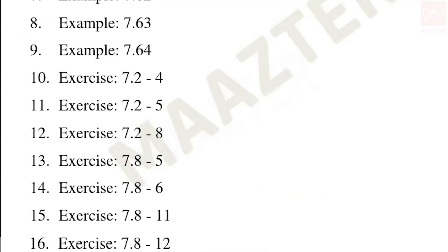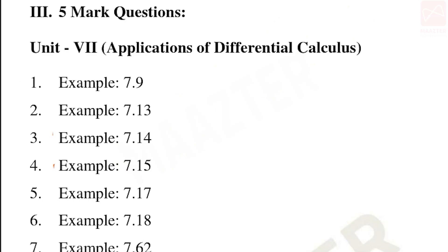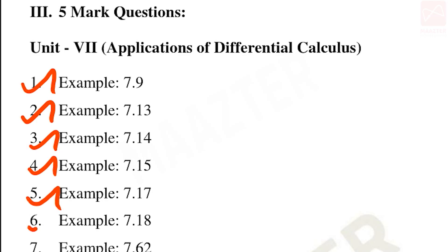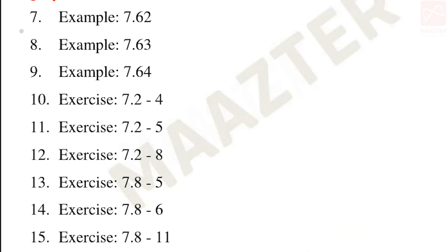Now for five-mark questions. Unit 7: examples 7.9, 7.13, 7.14, 7.15, 7.17, 7.18, 7.62, 7.63, and 7.64.